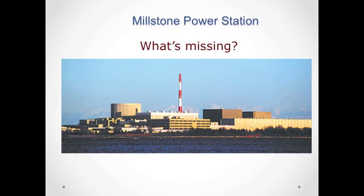Here's a photo of the Millstone nuclear power station on the coast, south of Eastern. What's missing here? It doesn't look like a typical nuclear power facility because there is no cooling tower. That's because the Millstone power station uses water from the sound, brings it into the plant for condensing purposes — it doesn't become radioactive — and then puts the water back in the sound a little bit warmer than when it came in. So there's some concern about thermal pollution.